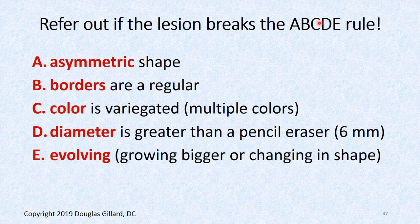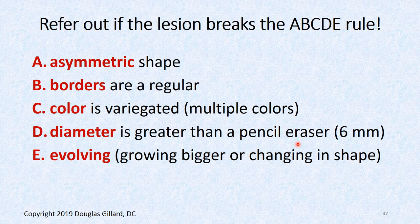The ABCDE rule: A is for asymmetric — if it's asymmetrical, you can't fold it in half. B is for borders — if the borders are irregular, refer it out. C is for color — if the color is variegated or multicolored, refer it out. D is for diameter — if it's greater than six millimeters, the size of a number two pencil eraser, refer it out. E is for evolving — if the thing is changing, make sure you measure it and put that in your SOAP notes. If it's grown when you re-evaluate, you need to send it out.